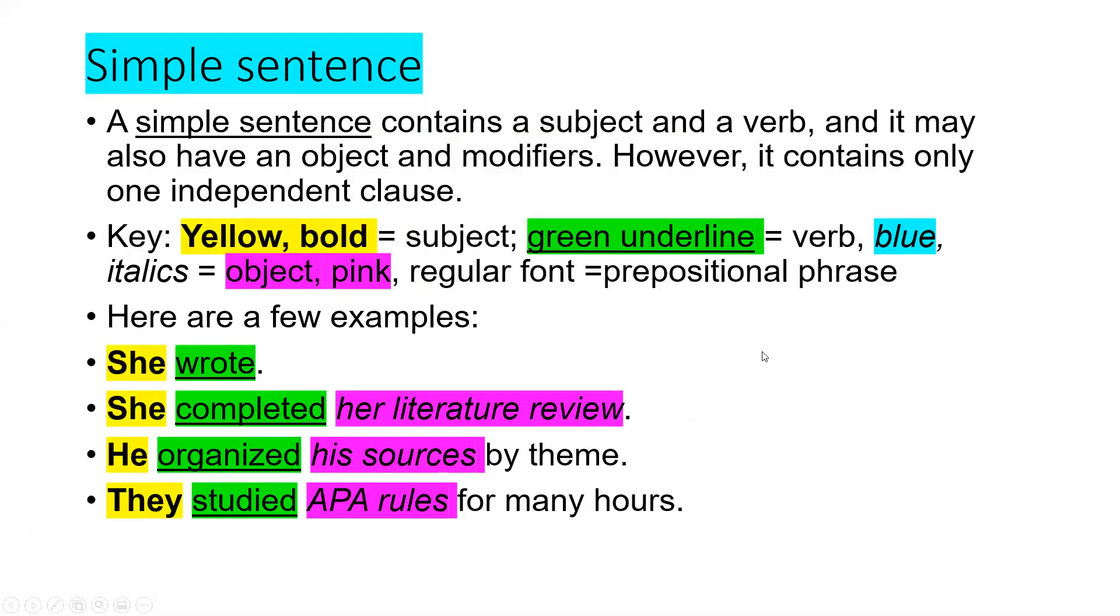What is a simple sentence? Well, it's that one that contains a subject and a verb, but sometimes they can contain also an object and modifiers. In the first sentence 'she wrote,' you can find the subject in yellow and the verb in green, but in the second one, beside the subject and the verb, we can find also a direct object. Her literature review is the object of this sentence.